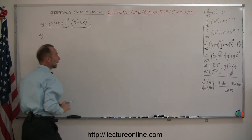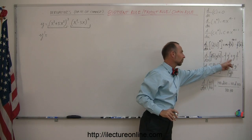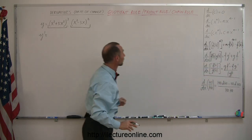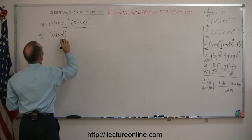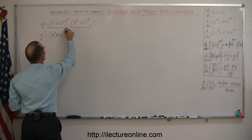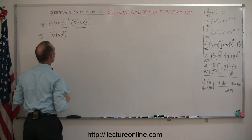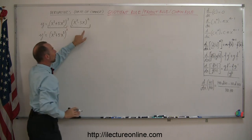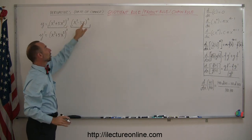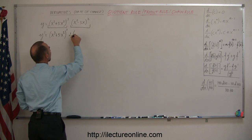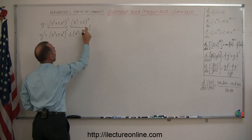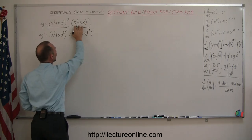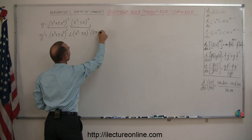Using the product rule, it will be the first times the derivative of the second, plus the second times the derivative of the first. So we take the first, which is (x³ + 5x²), times the derivative of (x² - 3x) to the third power — can't forget the third power. When we take that derivative, we use the chain rule: 2 times (x² - 3x) to the first power, times the derivative of what's inside, which is 2x minus 3.